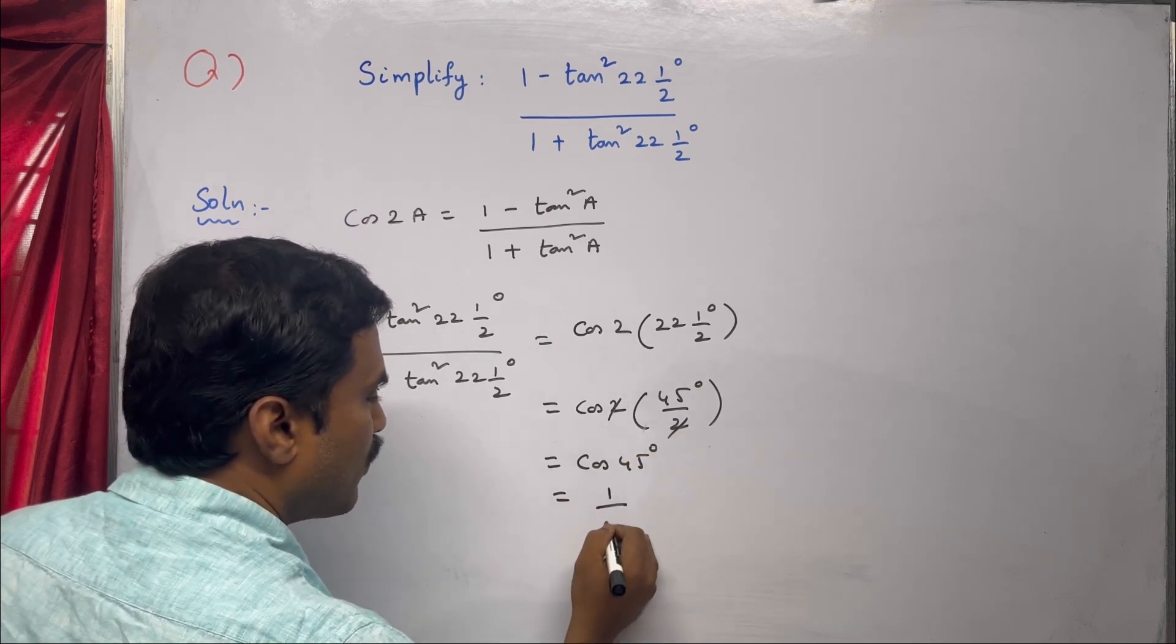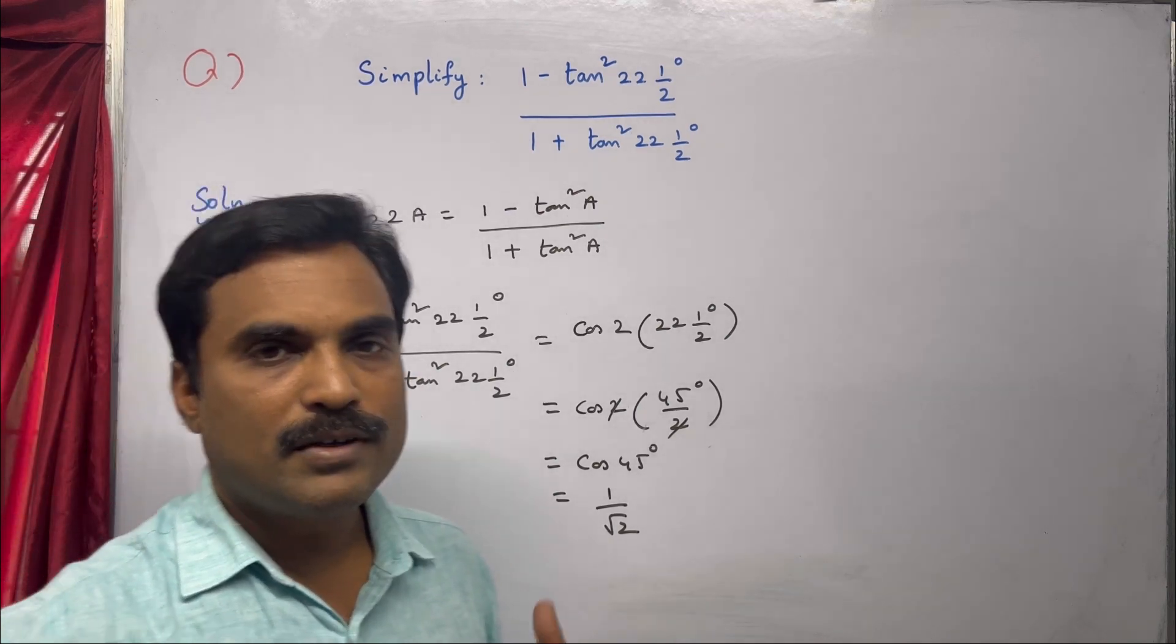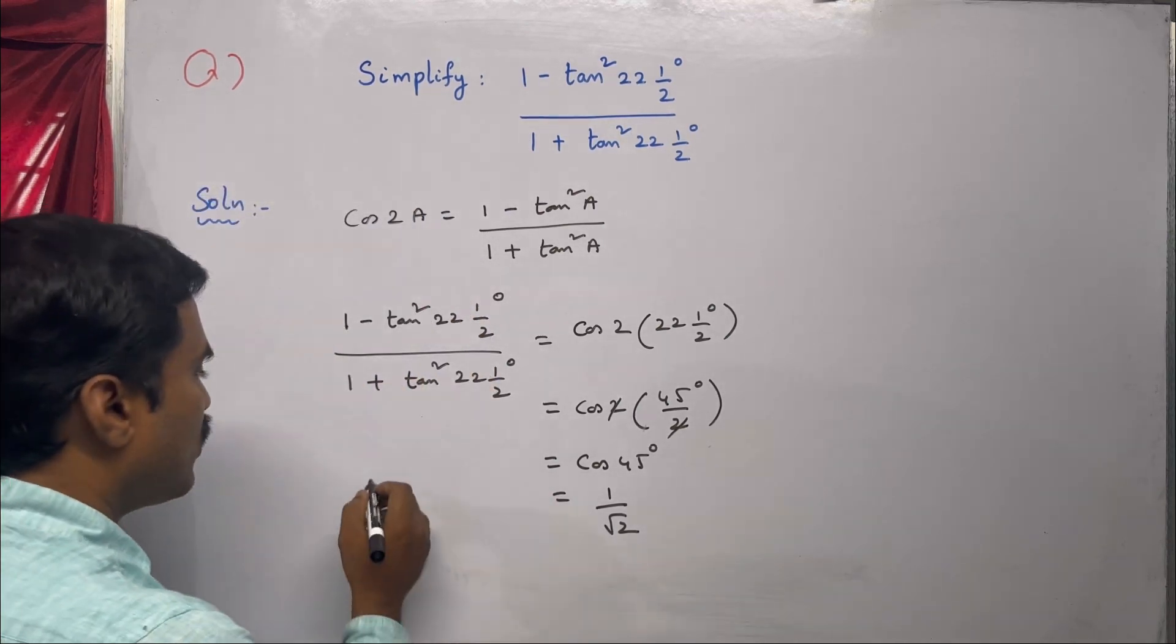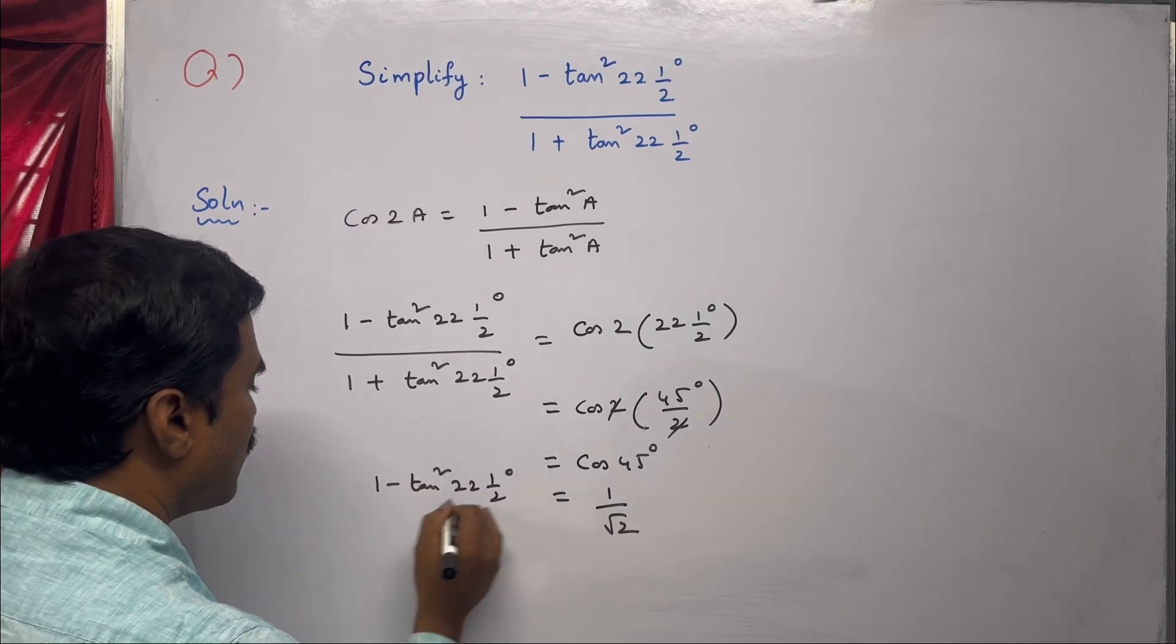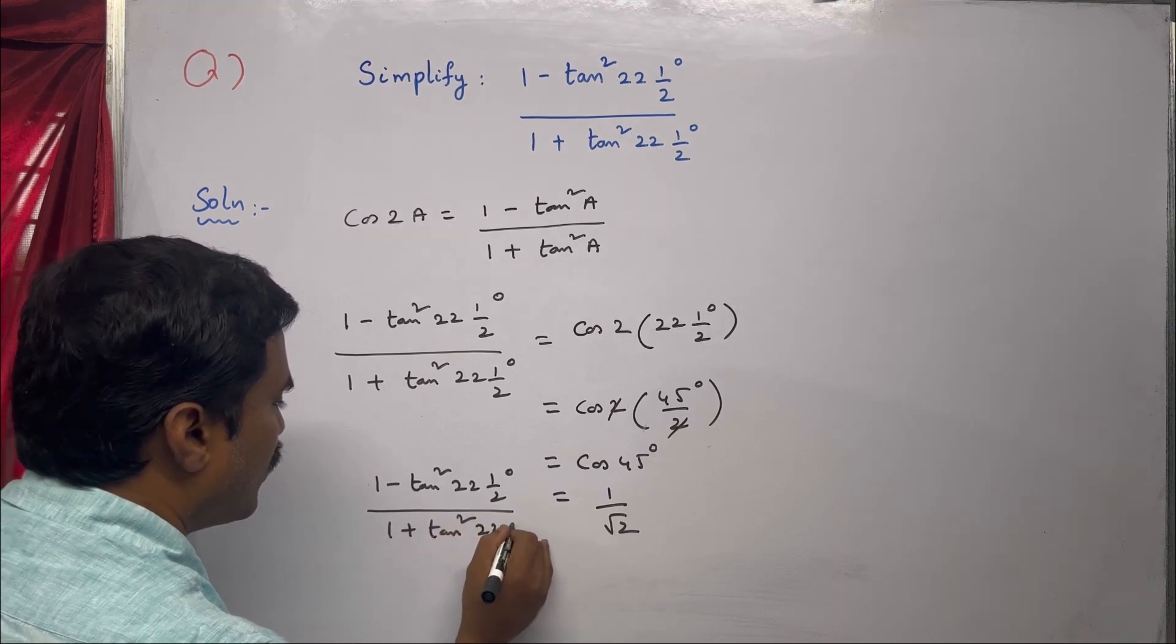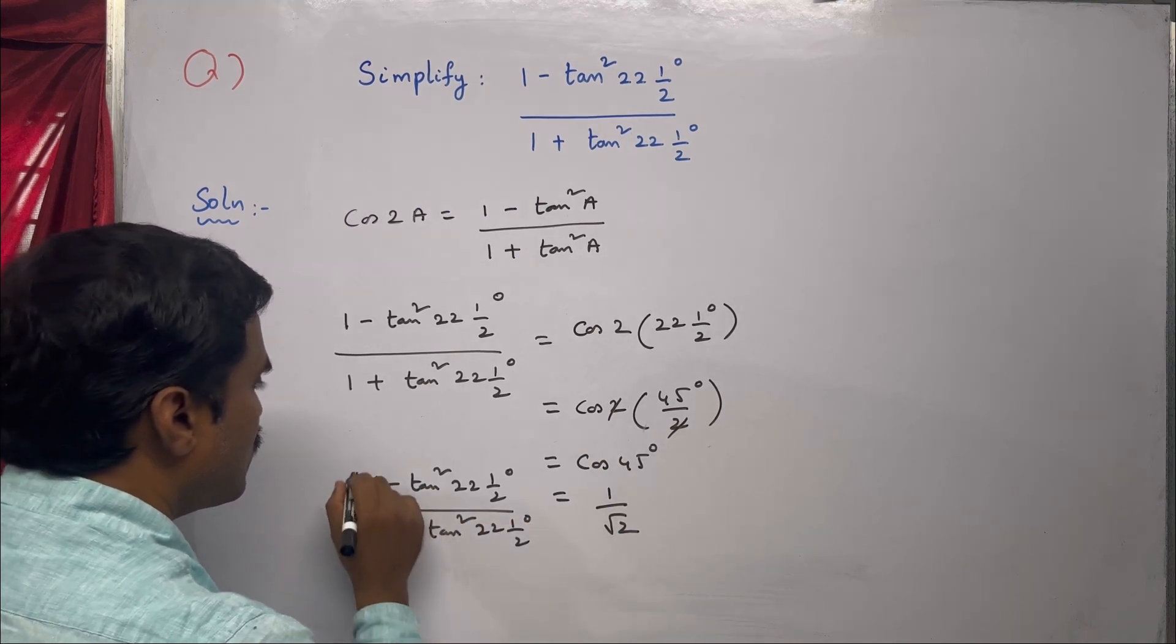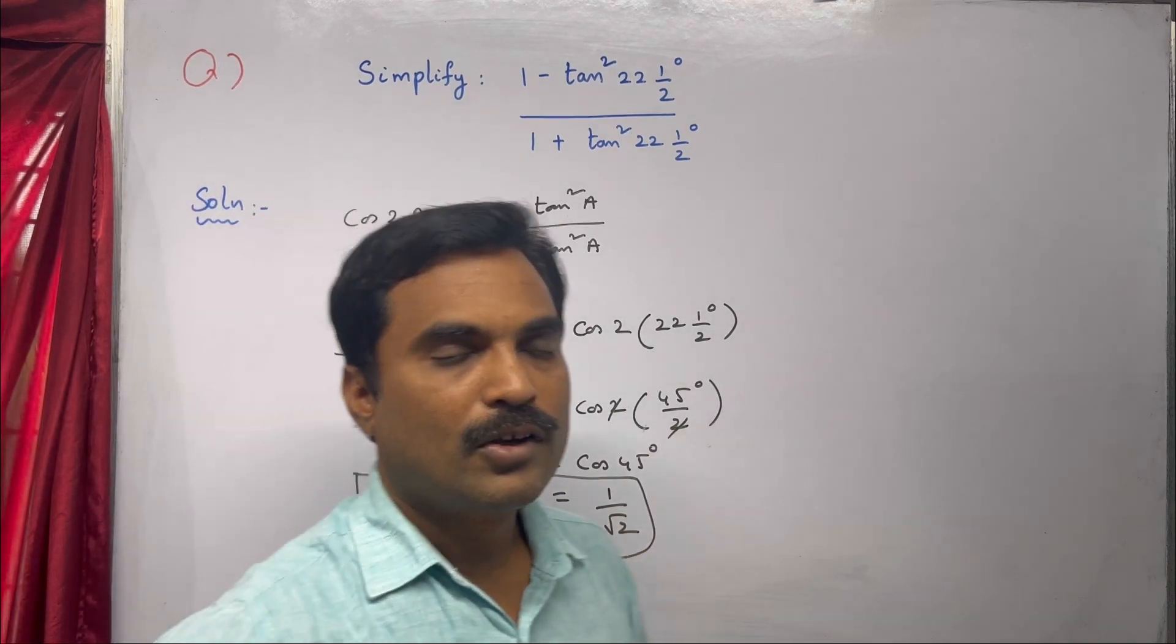So the solution for the above problem is: here you can write this as 1 minus tan squared 22 and 1/2 degrees divided by 1 plus tan squared 22 and 1/2 degrees. So this is equal to 1 by root 2.